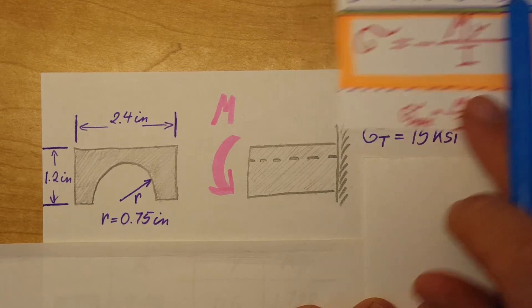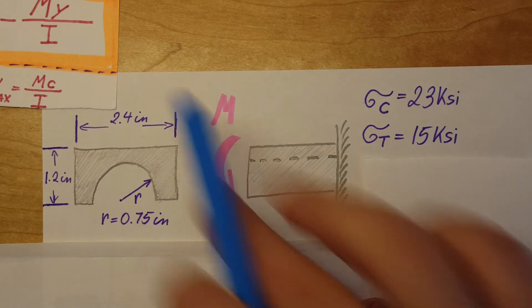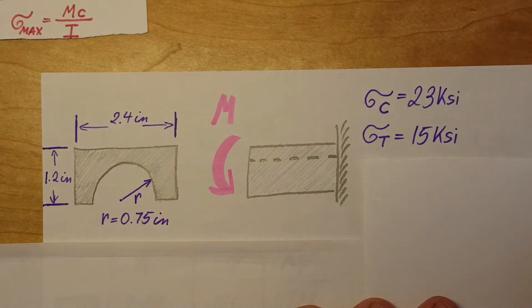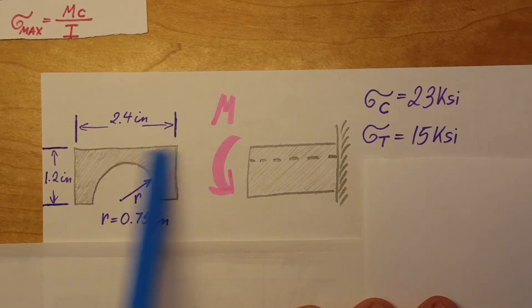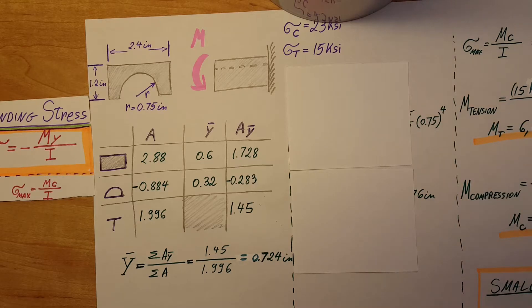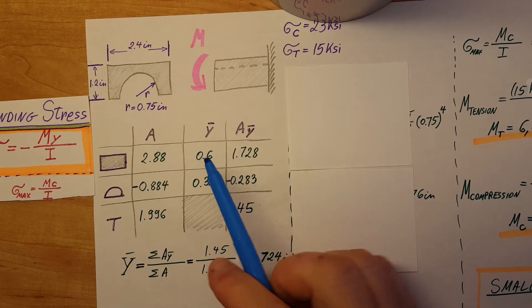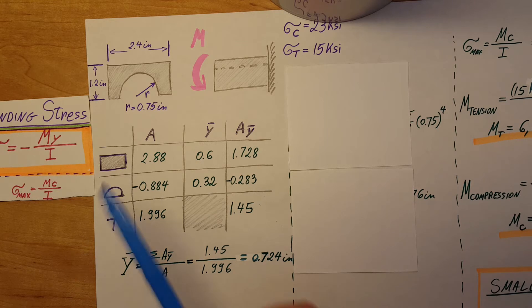In order to find our C and I, first we need to look at where's the neutral axis of this material. As we can see, it's not a symmetric shape, so we can't just assume it will be at the center. We have to do separate calculations to find it.